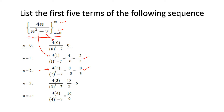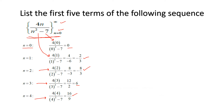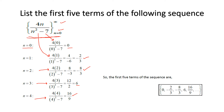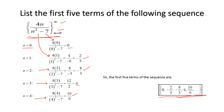We will replace n as 4 in the above formula, and so the first five terms of the sequence are listed. Let's see another example.